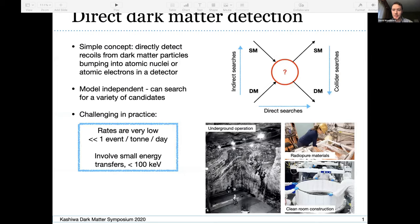I thought I'd start with a quick overview of direct dark matter detection. We've already heard a lot about this in this session, so I won't dwell too much on the details. Just to emphasize the main points, this is quite a simple concept. We're looking to directly detect recoils of dark matter particles bumping into standard model particles in our detector medium. This is a very model independent way to look for dark matter. We can search for a variety of different candidates.